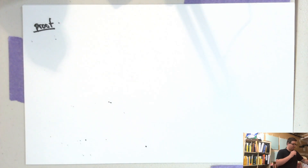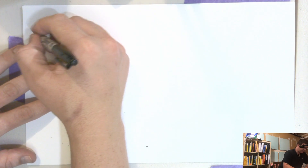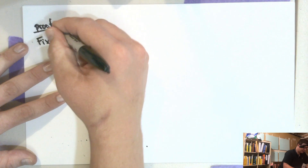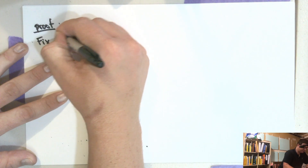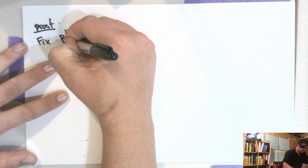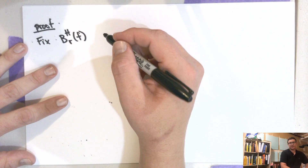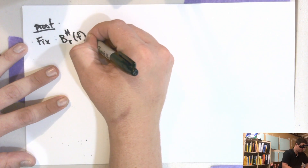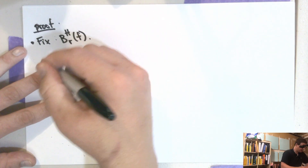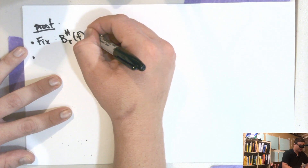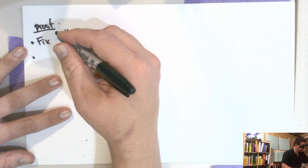So fix some open set. Fix some ball in this metric topology. The idea is we're going to show that there is one of these compact-open sets contained in here.